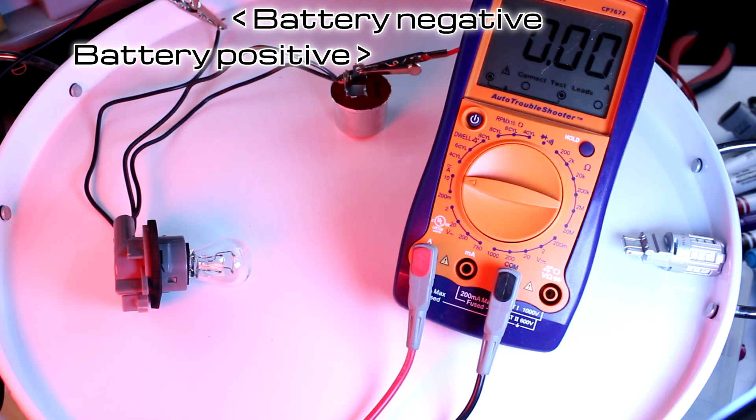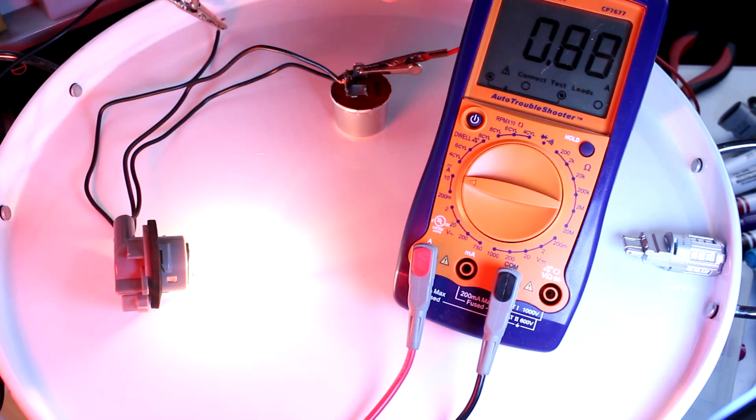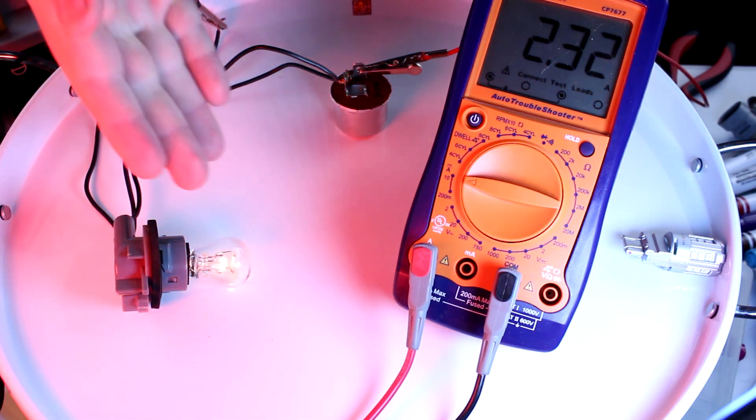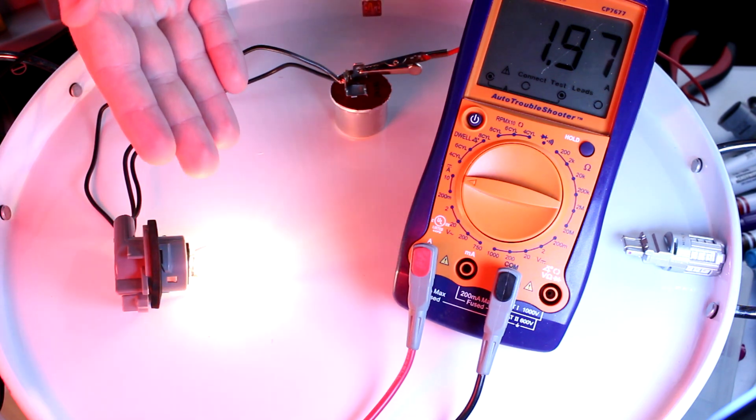This is a stripped down turn signal circuit. I'm going to connect the power now. This is a thermal flasher unit. It's what makes the turning on and off of this light possible.